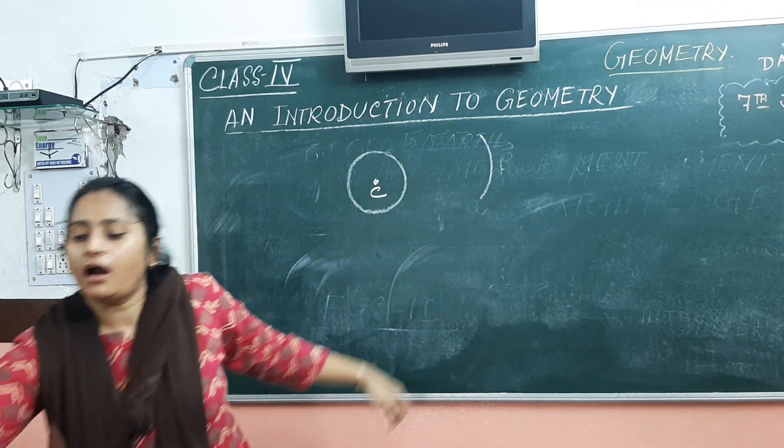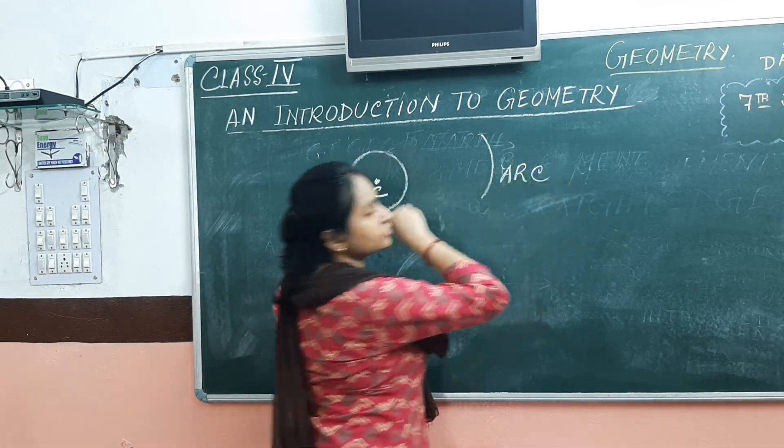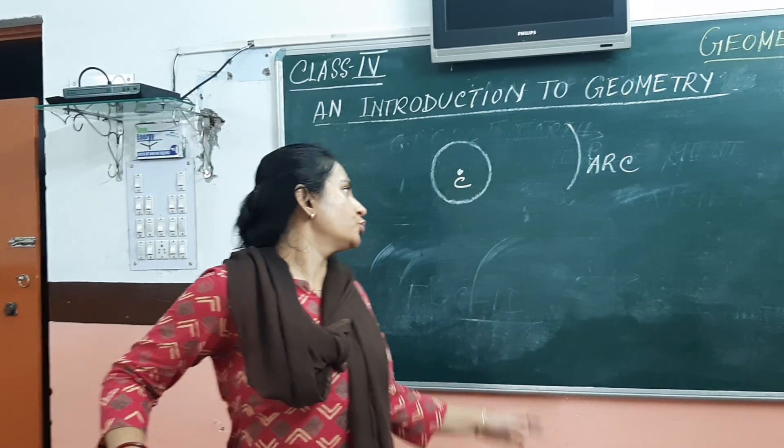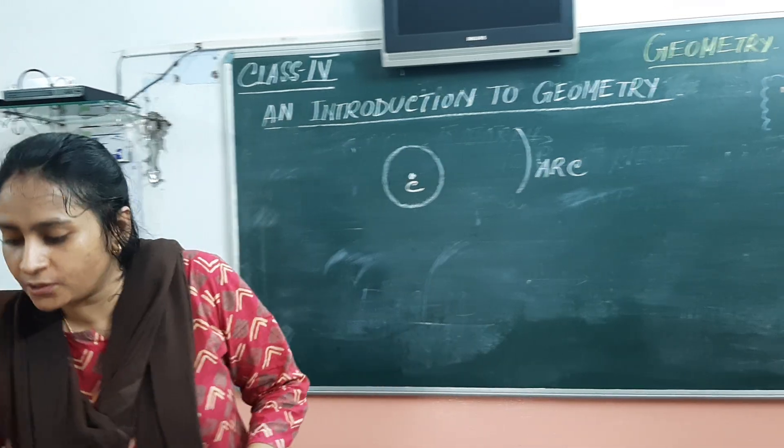This is called a circle and again this is called an arm. So children, a pair of compasses help us to draw arcs and circles.